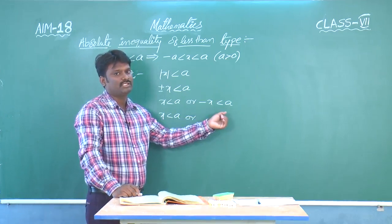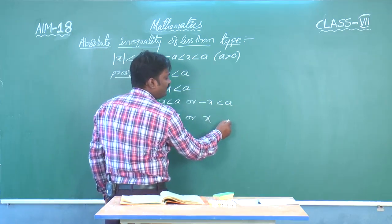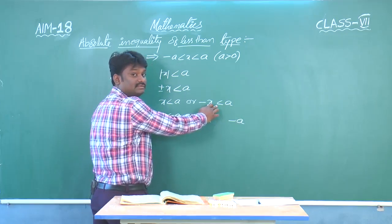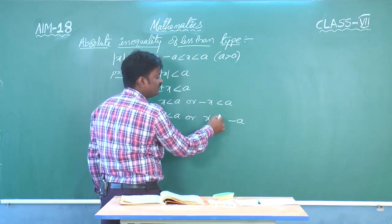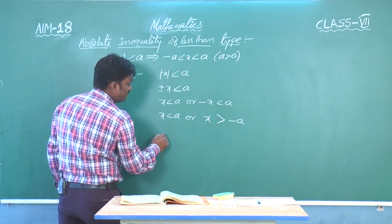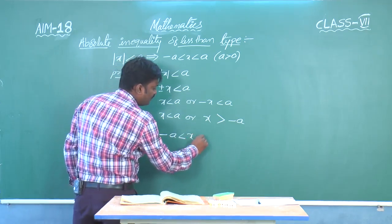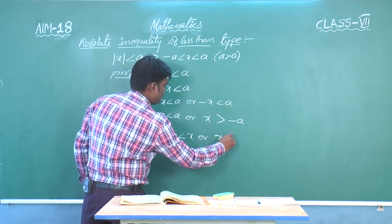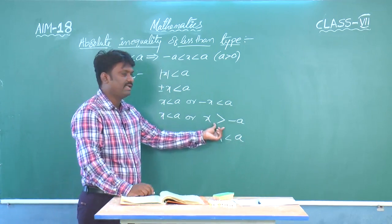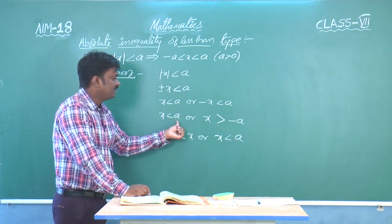Now, x should not have a negative value, so we multiply on both sides by minus. It becomes positive, and one important point: the inequality symbol also changes — less than becomes greater than. So writing in order: minus a less than x or x less than a, which is the same as minus a less than x less than a.